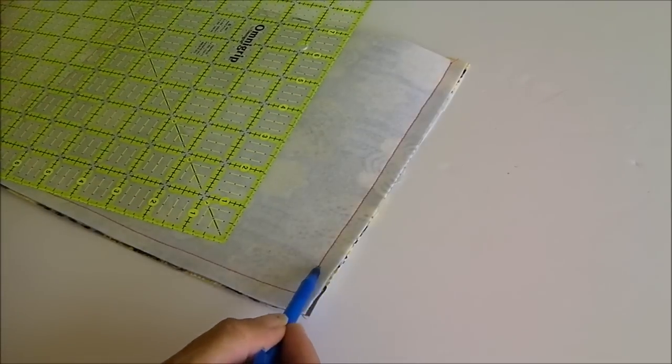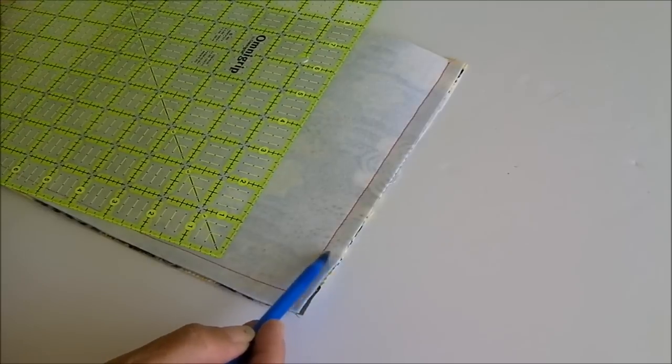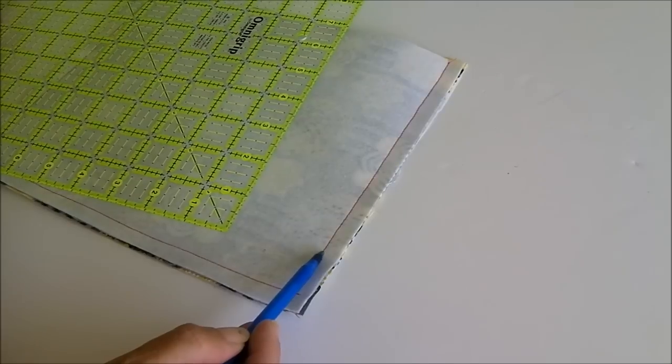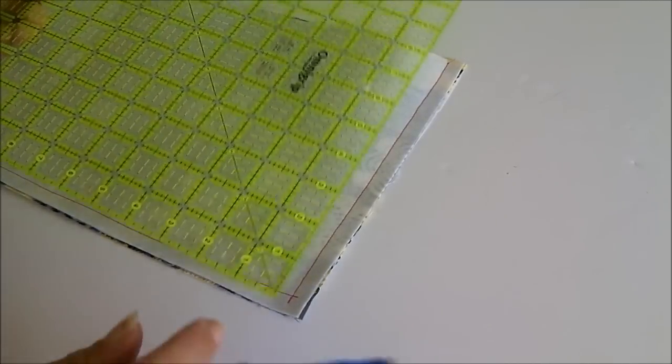However we need to measure from the seam line. If we measure from the edge and we have a half inch seam then we'll only actually be cutting out an inch so I'm going to measure from these seam lines and measure a square which is one and a half inches square.